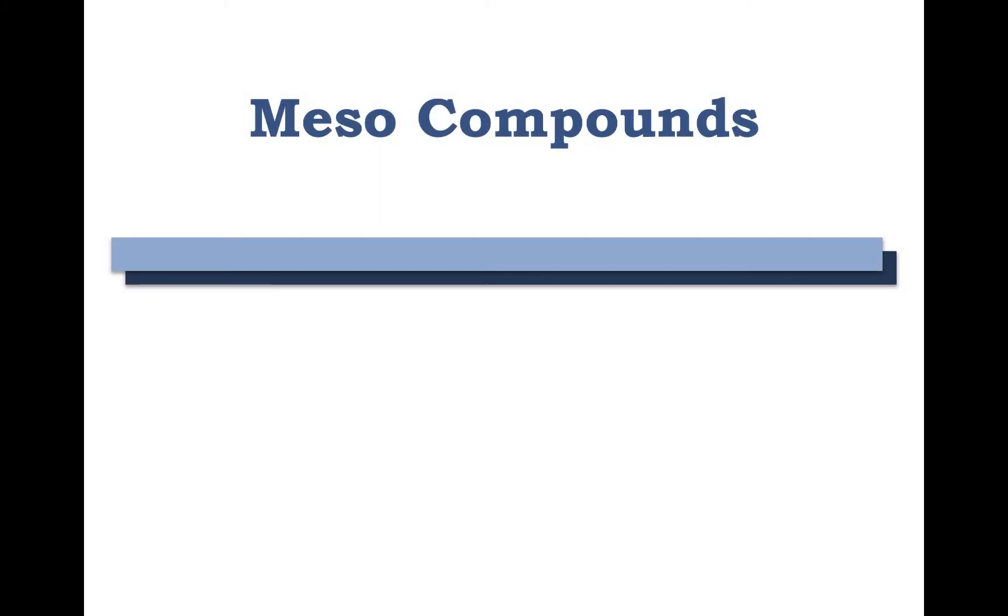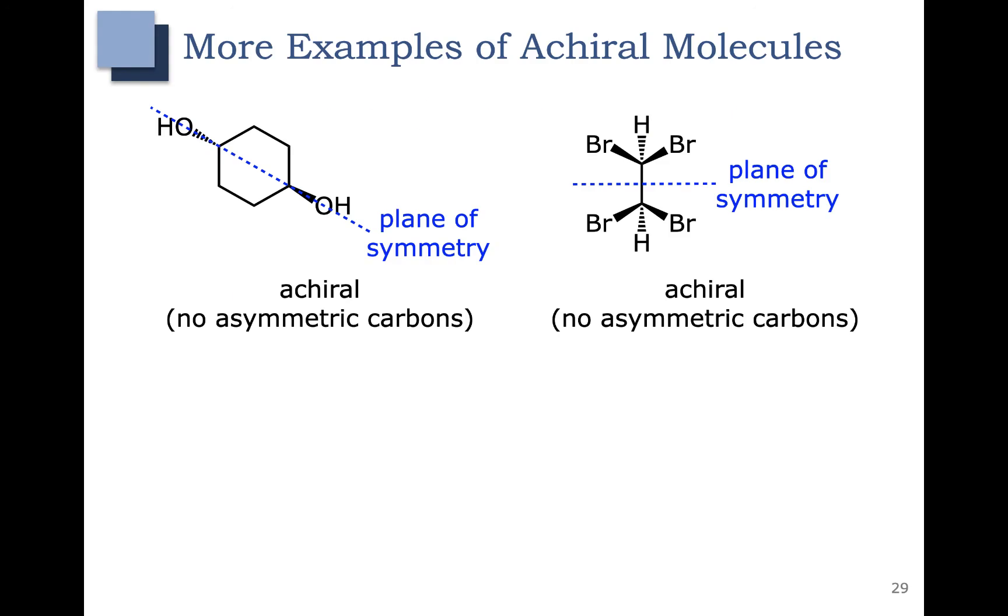In this video, we're going to talk about meso compounds. Here we have some examples of achiral molecules. As you can see in these molecules, we don't have any asymmetric or chiral carbons, and so these molecules are achiral.